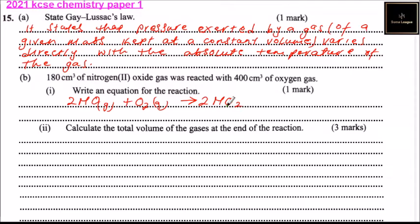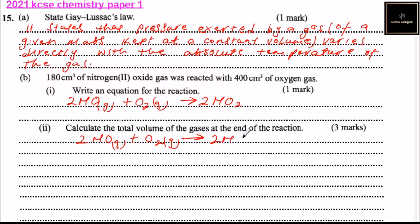gives two molecules of nitrogen dioxide. That is how you write the equation, and you get one mark. For part two, calculate the total volume of gas at the end of the reaction. Using the equation — 2NO(g) + O₂(g) → 2NO₂(g) — and applying ratio.